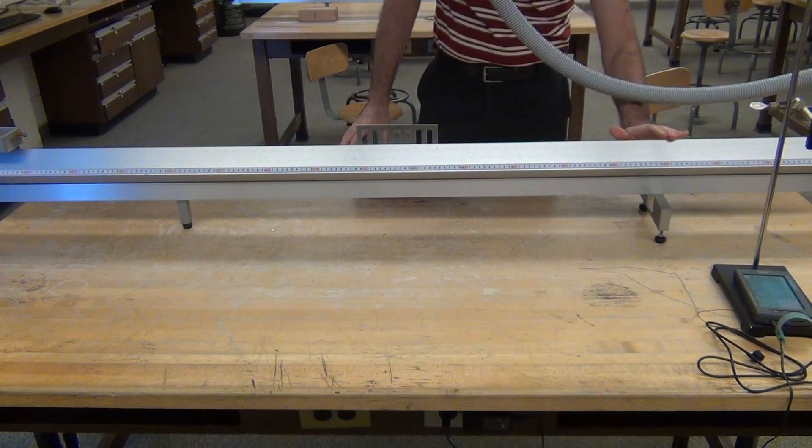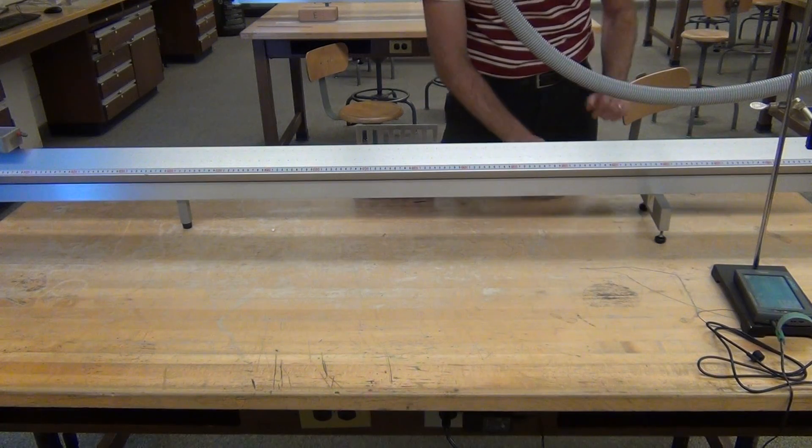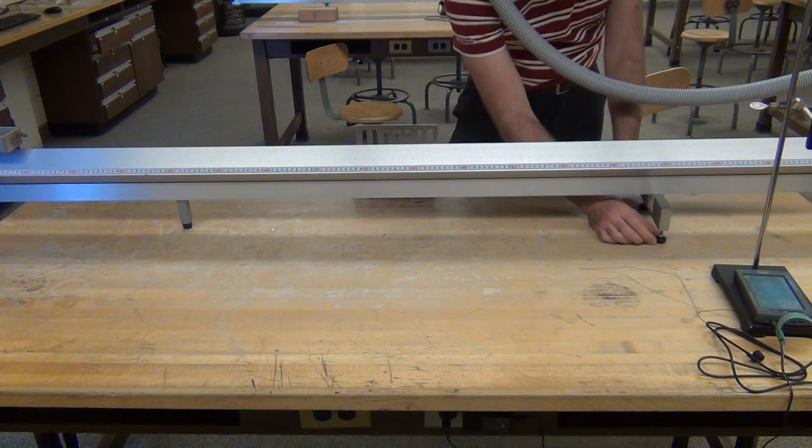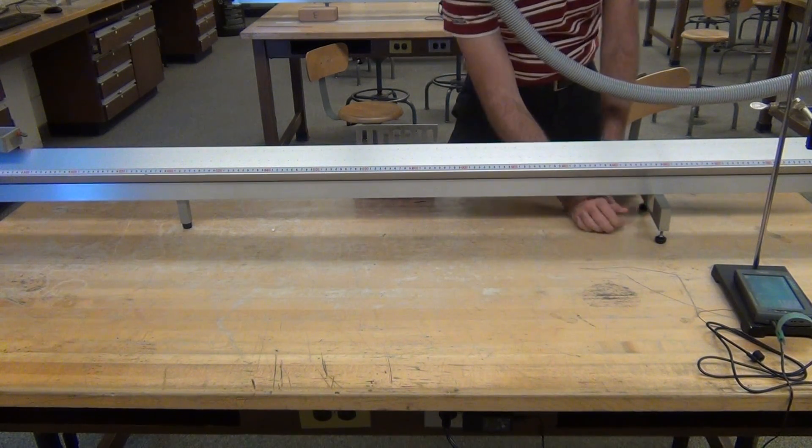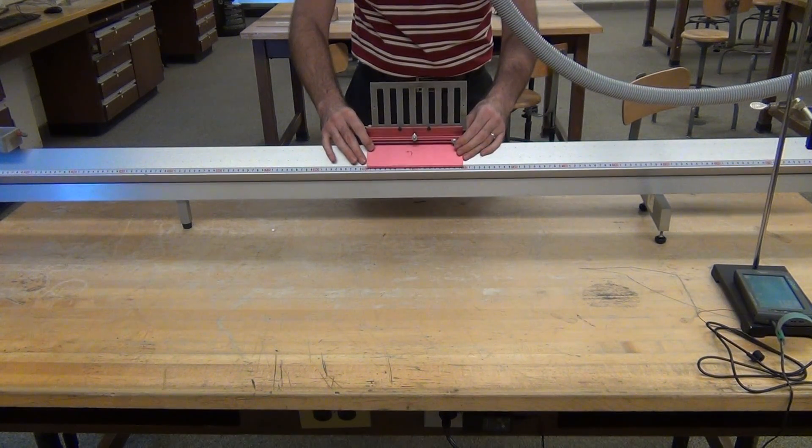One end of the air track has feet that can be adjusted by screws. This side was too high, so I'm going to screw the bolts into the air track and lower that side.